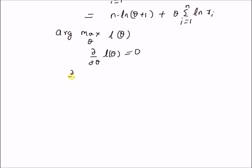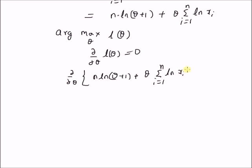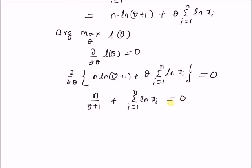So we have the derivative with respect to theta of the log likelihood function — which is n times log of theta plus 1, plus theta times the summation from i equal to 1 to n of log of x_i — set equal to 0. The derivative of the first term is n divided by theta plus 1, and the second term gives simply the summation from i equal to 1 to n of log of x_i, equal to 0.